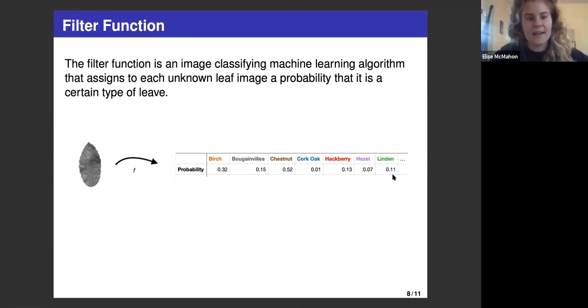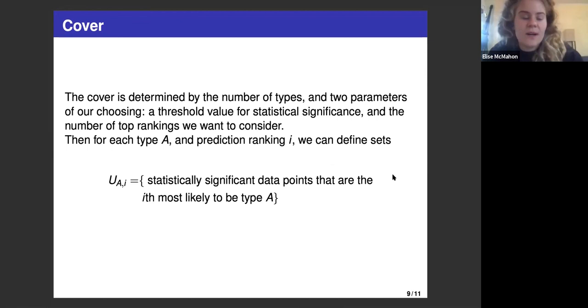That led them to come up with this new cover, which is determined by the number of types that we're predicting and two parameters of our choosing: a threshold value for statistical significance, so we're not going to consider all the probabilities, just the ones that are statistically significant, and the number of top rankings that we want to consider. We're not going to care if a leaf is ranked the 28th prediction if we were to rank them by their likelihood.